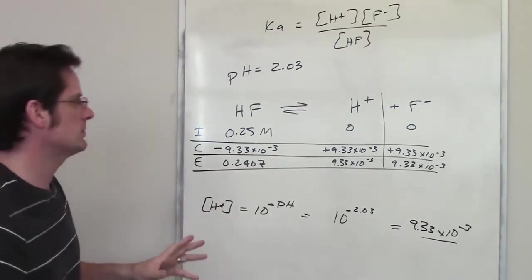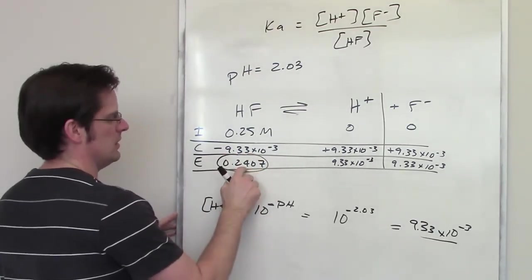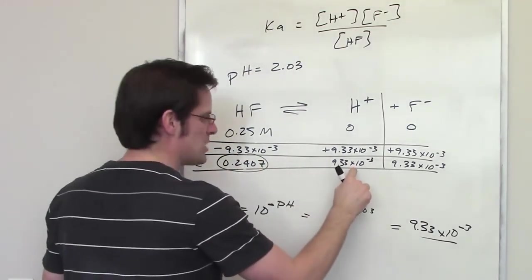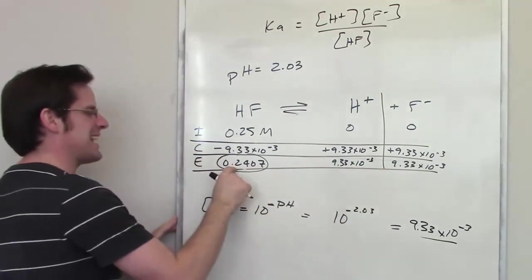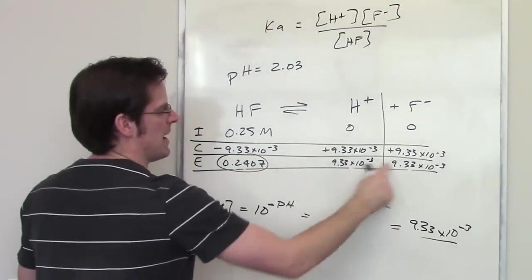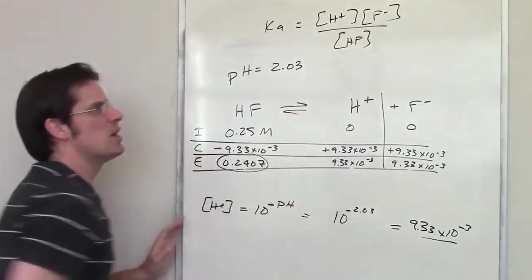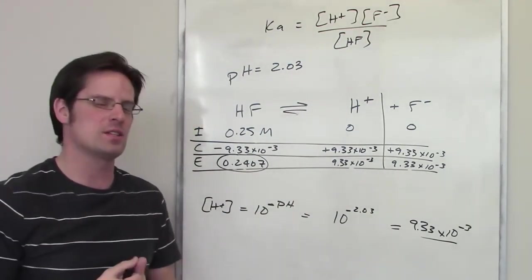So now I have the equilibrium concentration of HF. I have the equilibrium concentrations of H+ and F-. I have actual numbers for those. So all I have to do is take the HF concentration, put it in there, and then each of these amounts, and put them in there, throw them into my calculator, and that will give me my final Ka value for this.